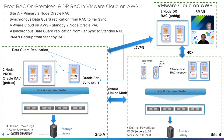The final architecture has Site A with a primary two-node Oracle RAC, with synchronous data replication from Oracle RAC to Farsync. VMware Cloud on AWS hosts the standby two-node Oracle RAC, receiving asynchronous DataGuard replication from the Farsync on Site A. Oracle backups can be offloaded from the production database to the standby, saving compute cycles on production for actual workload processing.